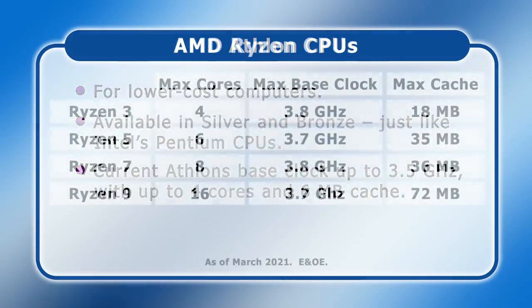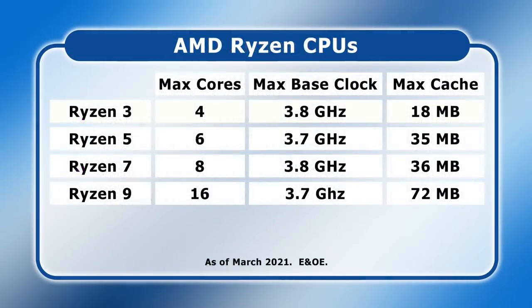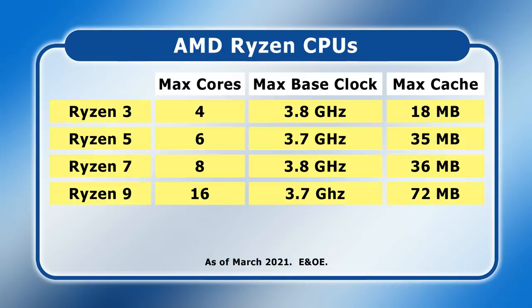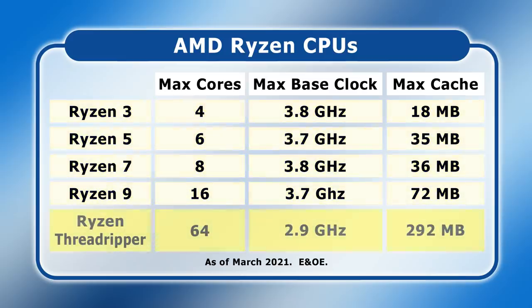In competition to Intel's Core family, we next have AMD's Ryzen 3, 5, 7, and 9 microprocessors. All of these feature AMD's SMT multi-threading technology, and have very impressive core counts and cache in the higher-end processors. Adding in AMD's Ryzen Threadripper family, the specifications get very impressive indeed, with the top-of-the-range Threadripper 3990X having 64 cores, a base clock frequency of 2.9 GHz, and a combined 292 MB of cache.